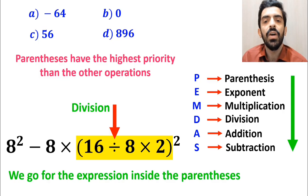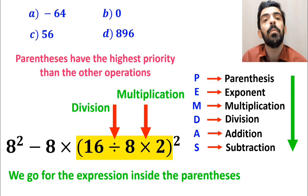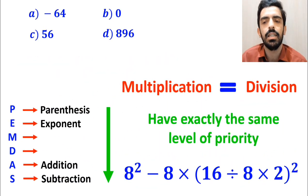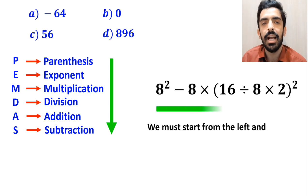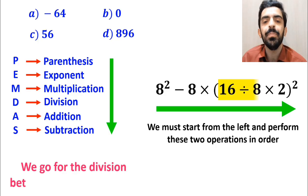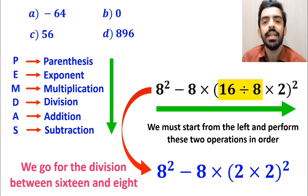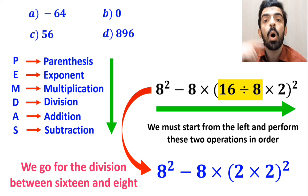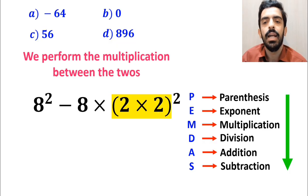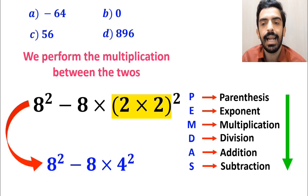Inside the parenthesis, first we have a division sign and then a multiplication sign. It's very important to note that multiplication and division have exactly the same level of priority. In this situation, we must start from the left and perform these two operations in order. So first we go for the division between 16 and 8, and write this expression as 8 squared minus 8 multiplied by 2 times 2 inside the parenthesis and all squared. Then we perform the multiplication between the twos, and this expression simplifies to 8 squared minus 8 multiplied by 4 squared.